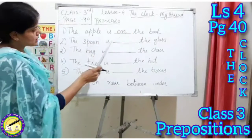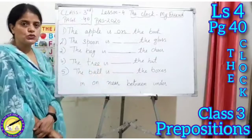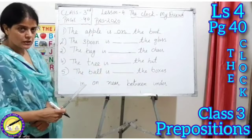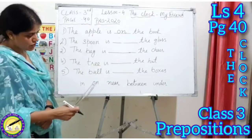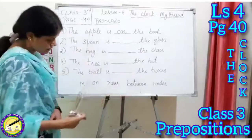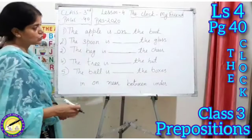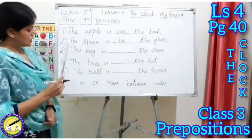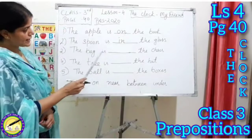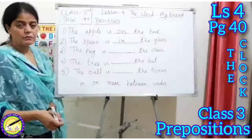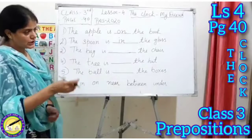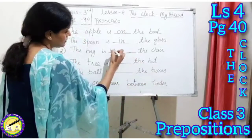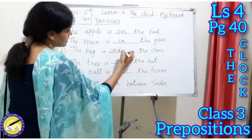The spoon is blank the glass. The spoon — the chamcha — was inside the glass. So from the options in, on, near, between, under, we write 'in'. Because 'in' means inside. We write: the spoon is in the glass. Third: the bag is blank the chair. The bag was lying under the chair, so we write 'under'. The bag is under the chair.